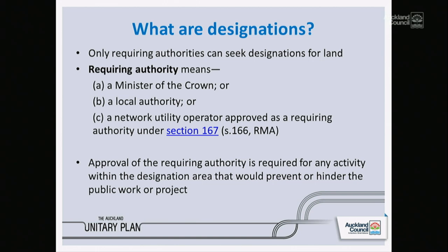Only a requirement for land — and requiring authorities are the Minister of the Crown, Crown ministries, any council, Auckland Council is a requiring authority, or network utility operators approved under section 167 of the RMA. There are a list of network utility providers who are requiring authorities who can use this technique of a designation rather than obtaining land use resource consent.